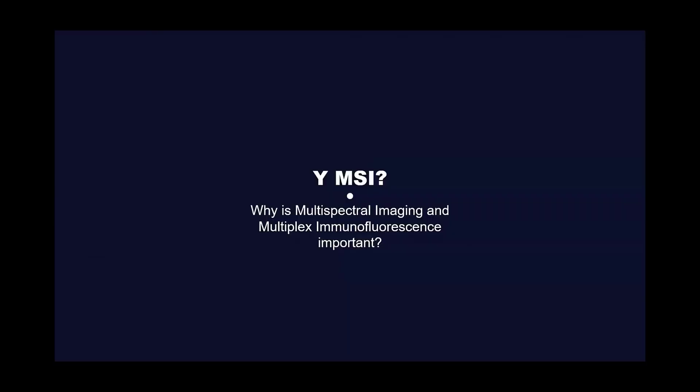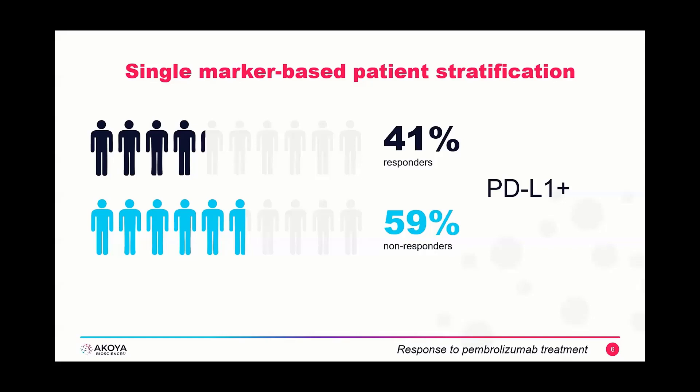Many of you — approximately 90% — have already used our technology before, so I want to briefly address the importance of multispectral imaging in immuno-oncology and other disciplines, because multiplex imaging and spatial analysis are part of our DNA at Akoya. Why multiplexing? Single marker-based discovery and patient stratification are very promising, but they lack accuracy and predictive value.